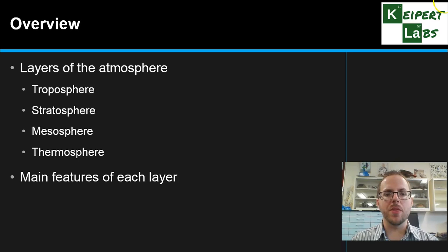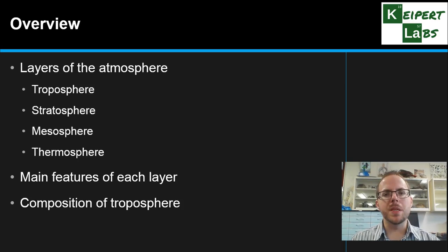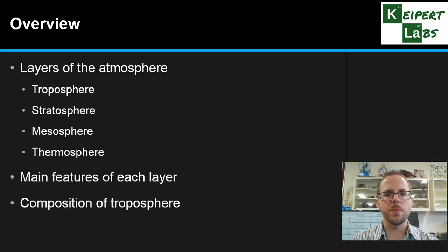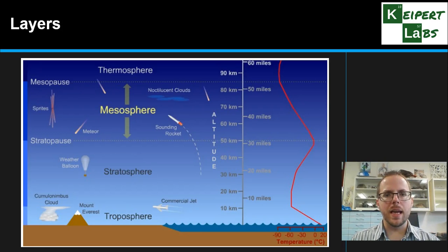We're also going to talk about the main features of each layer, where they are, what we find, and particularly the composition of the troposphere — the part of the atmosphere closest to Earth. Let's have a look at the layered structure of the atmosphere.